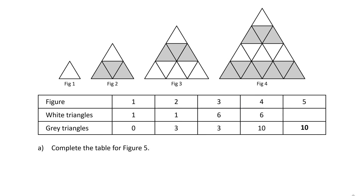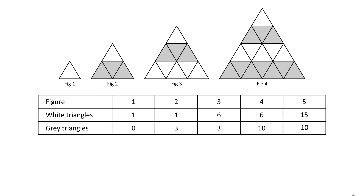Now how do we get the number of white triangles? Let's look for a pattern in the difference of the number of triangles. In figure 1, there is one more white triangle than gray triangles. In figure 2, the difference is 2, but there are more gray triangles. In figure 3, the difference is 3 and there are more white triangles. In figure 4, the difference is 4, but it flips — there are more gray triangles. So continuing this pattern, in figure 5 the difference will be 5 and it will flip so there are more white triangles. So 10 plus 5 equals 15. We have completed the table for figure 5, and that's part A.